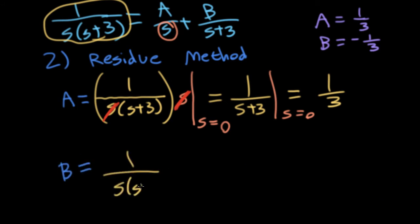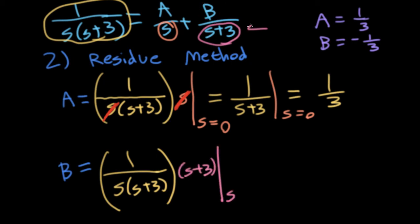Okay, so let's use the same trick to find B. I'm expanding one over s(s plus 3), and I'm going to multiply it by s plus three, because that's the denominator of the term that has B in it. And then we evaluate it at the root, which makes this denominator zero. So that's going to be s equals minus three. The s plus threes cancel, and I'm left with one over s equal one over minus three.